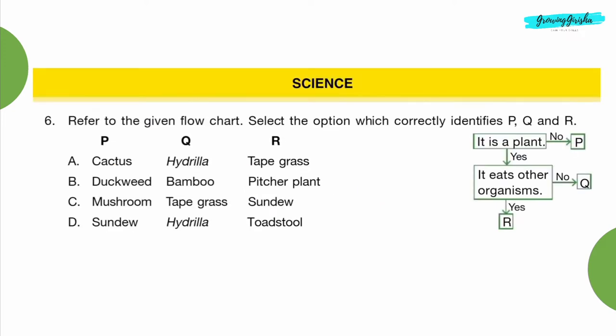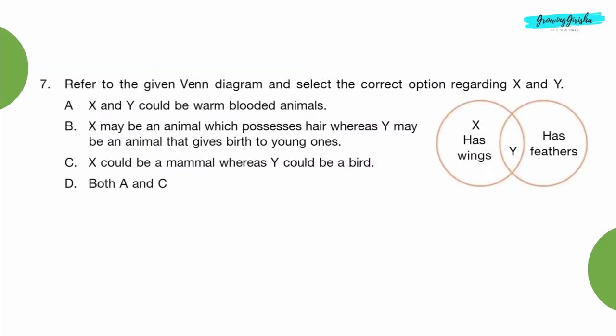Science. Question 6: Refer to the given flow chart. Select the option which correctly identifies P, Q and R. Option C: P is mushroom, Q is tape grass and R is sundew.